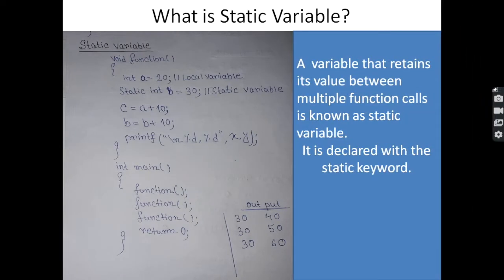Next, what is a static variable? Before discussing static variables, we first need to know what the meaning of 'static' is here. Static means to hold on to a value between multiple function calls. So a static variable is a variable that retains its value between multiple function calls.